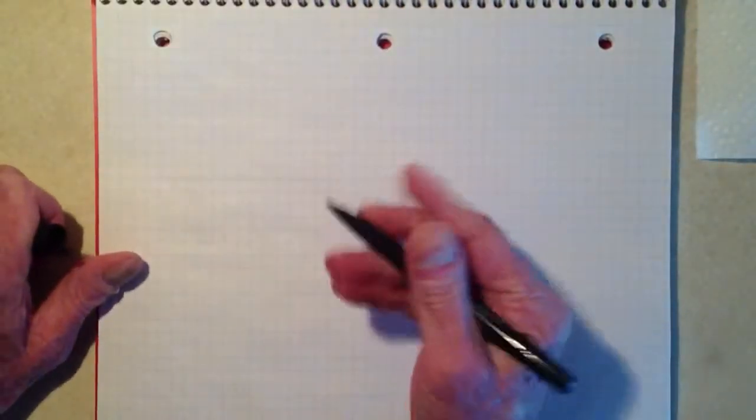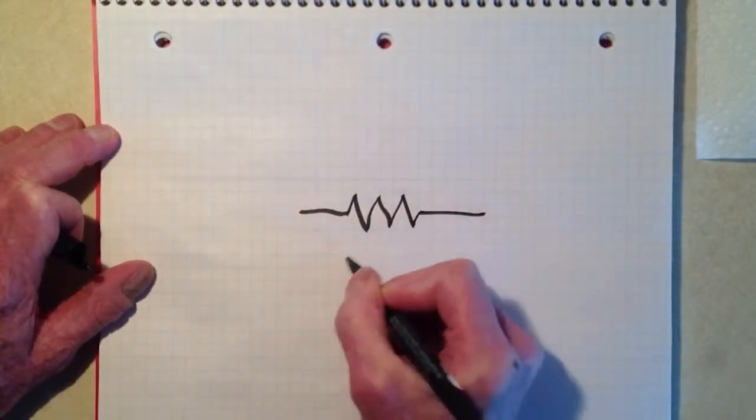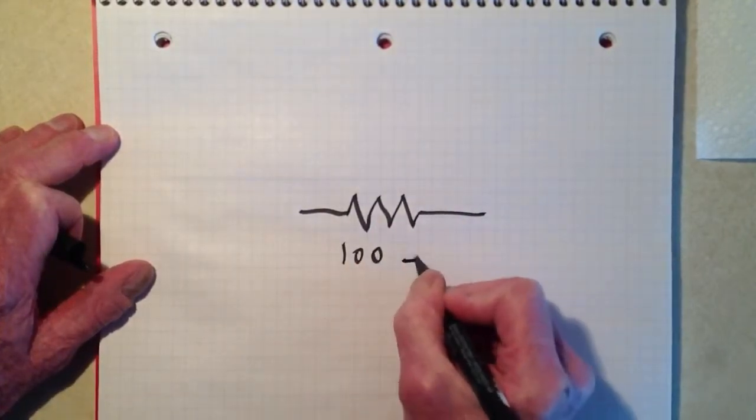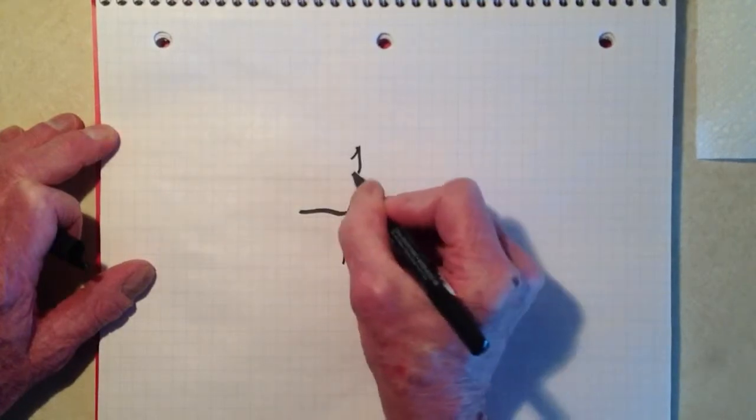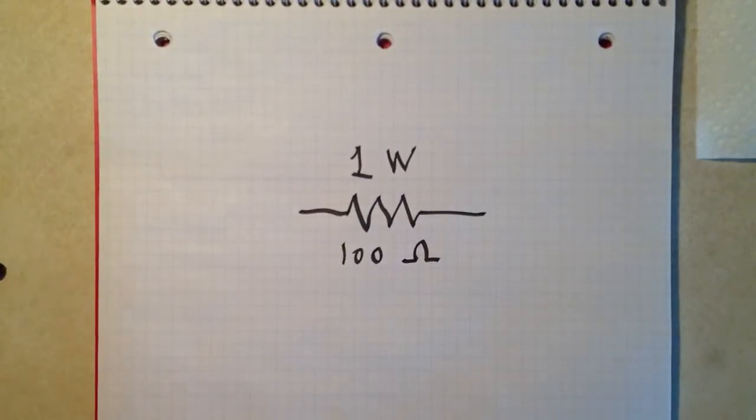Let's start over here. Here, once again, is our resistor: 100 ohms rated at 1 watt. Well, suppose that we put 7 volts through that resistor.